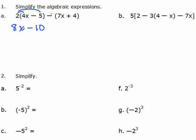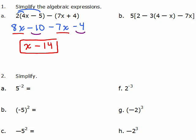We have to be careful when we distribute this second negative sign — it's going to change the signs of both things inside the parentheses, so it's negative 7x and negative 4. Now we can combine our like terms: 8x minus 7x is x, and negative 10 and negative 4 is negative 14. So the answer to 1a is x minus 14.